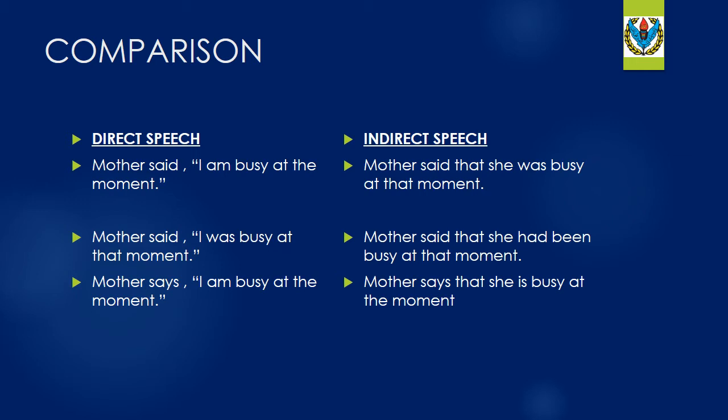Let's closely study the direct and indirect speech and compare how many changes have taken place while converting a direct sentence into indirect speech. Look at sentence number one: 'Mother said, I'm busy at the moment.' Its indirect version is: 'Mother said that she was busy at the moment.' The first change you can notice is the removal of inverted commas — there are no inverted commas in an indirect sentence.